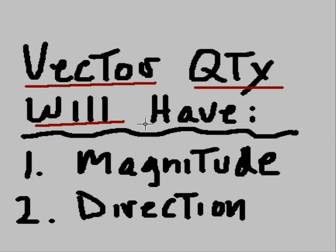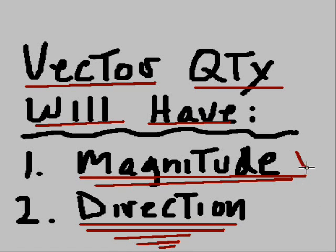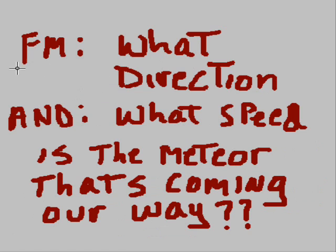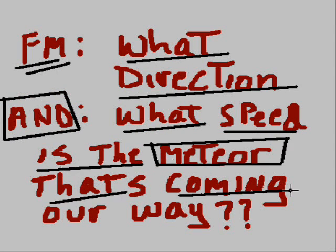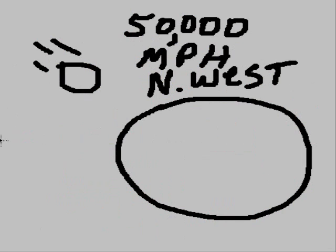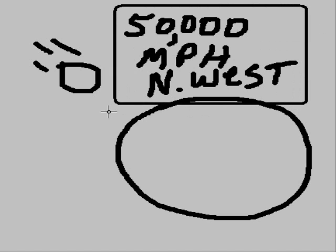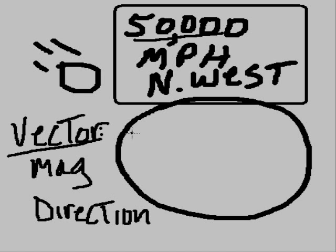Now, a vector quantity, au contraire, is going to have something else. It's going to have magnitude, just like the scalar, but it's also going to have direction. So here's another question: from what direction and what speed is the meteor that's coming our way? If you get an answer like 50,000 miles per hour northwest, that's a vector — it has magnitude and it has direction.